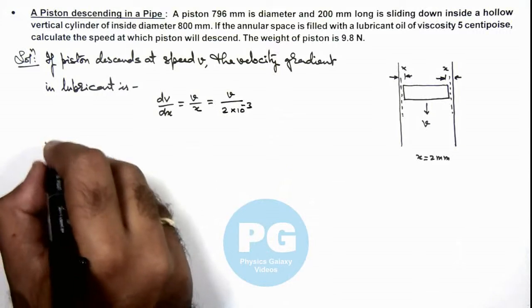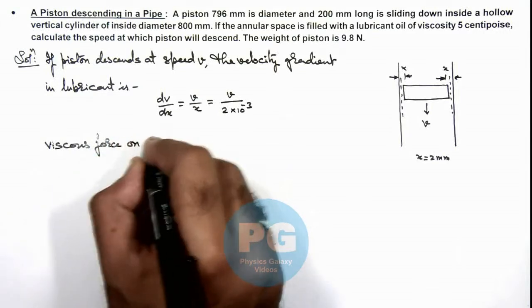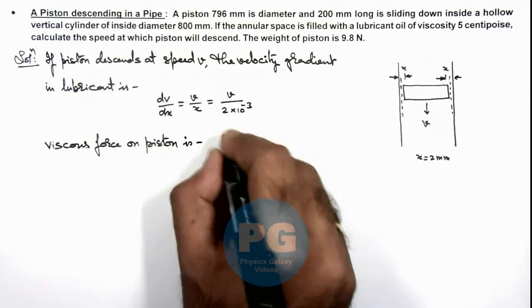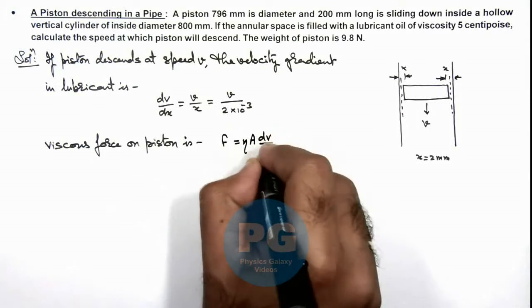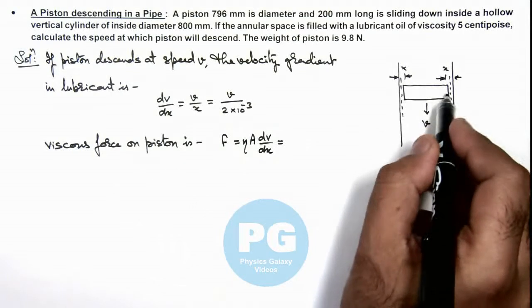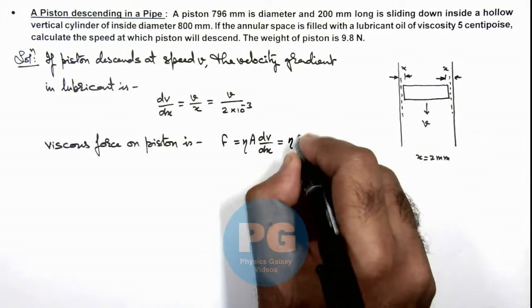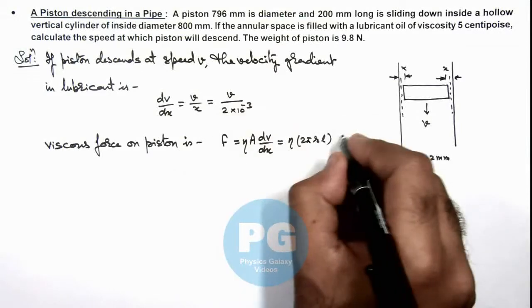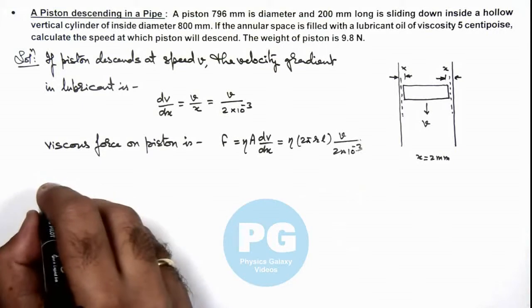And we can calculate the viscous force on piston. This viscous force we can calculate as eta A dv by dx. And in this situation the area of piston wall which is in contact with the lubricant we can write as eta multiplied by 2 pi r l multiplied by dv by dx, we can write as v by 2 into 10 to power minus 3.